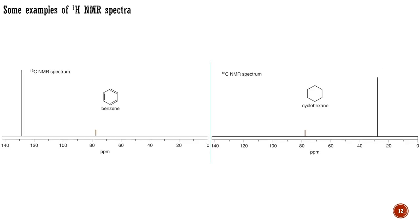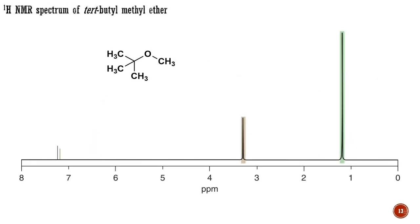For benzene, the carbon NMR signal falls in the unsaturated carbon region at 129 ppm, while for cyclohexane it is in the saturated carbon region at 27 ppm. Tert-butyl methyl ether is a solvent and fuel additive whose proton NMR spectrum illustrates the effect of a nearby oxygen atom. The large peak at 1.1 ppm comes from the nine hydrogen atoms making up three identical methyl groups of the tert-butyl part of the molecule, while the three hydrogen atoms of the methyl part of the ether are at 3.15 ppm. These three hydrogen atoms are all bonded directly to a carbon atom which itself is bonded to oxygen, whose electronegativity attracts their electrons, deshielding the hydrogen nuclei and shifting them to larger chemical shift.